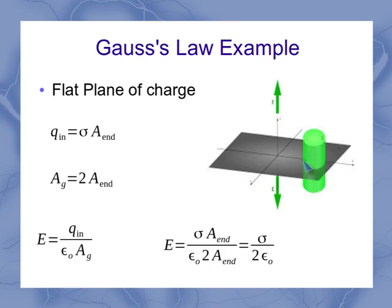And because it's a straight-sided cylinder, the area of the end cap of the cylinder is the same as the area where the cylinder intersects the sheet of charge. So I've got my surface charge density times the area of that end cap is going to give me the total charge inside.